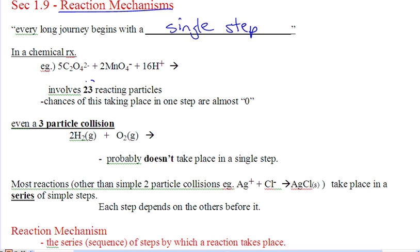My little example, we have 23 reacting particles. There is no way that all 23 of these things with the right mole ratios can collide into each other in one step. All the right bonds form, all the right bonds break, and then they form the products. It's almost impossible.